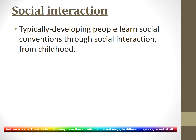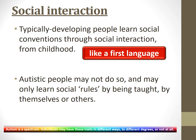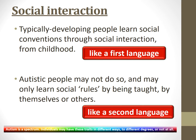Social interaction: typically developing people learn social conventions — such as how conversations go — through social interaction from childhood, from the people around them. Autistic people may not do so and may only learn these social rules by being taught by themselves or others. This is like how we learn language. You learn your first language through social interaction, but a second language you might learn at school through studying and being taught.